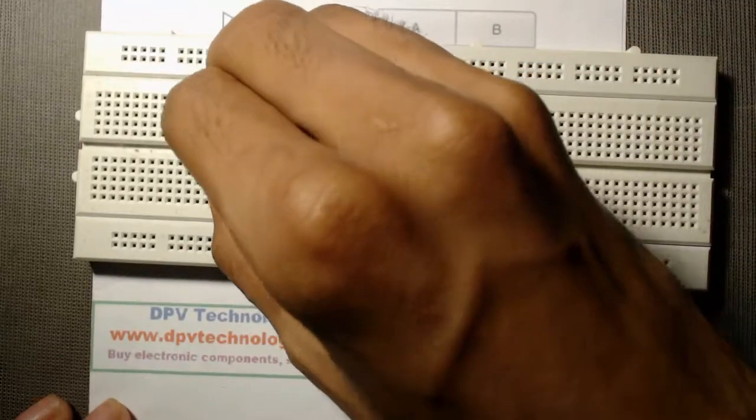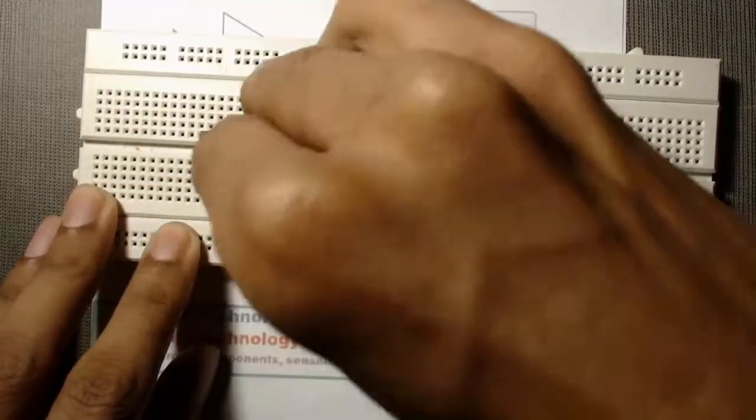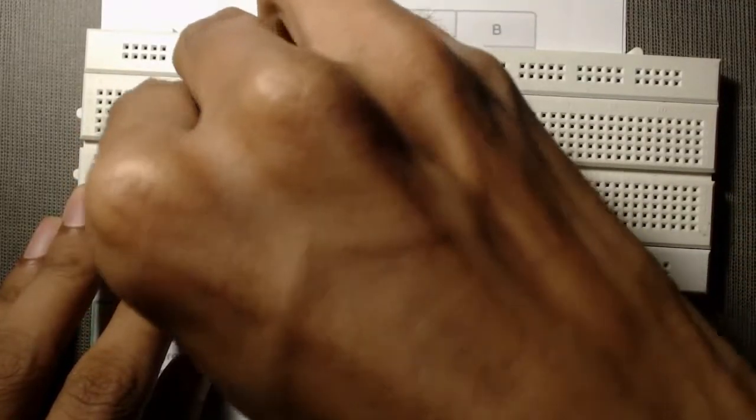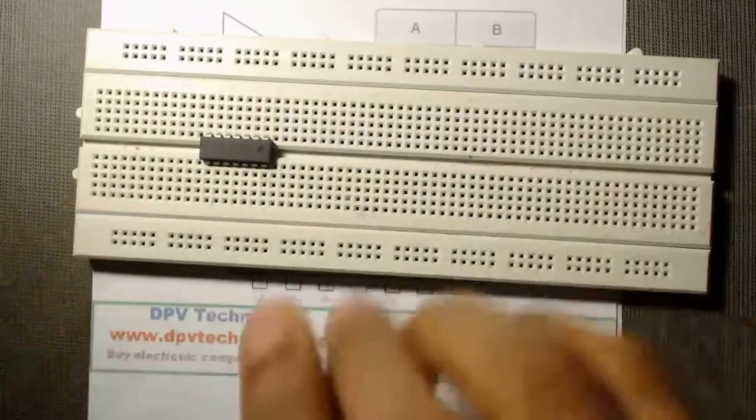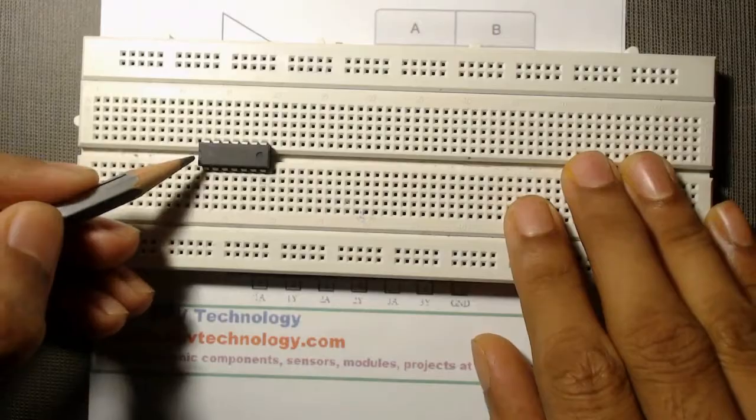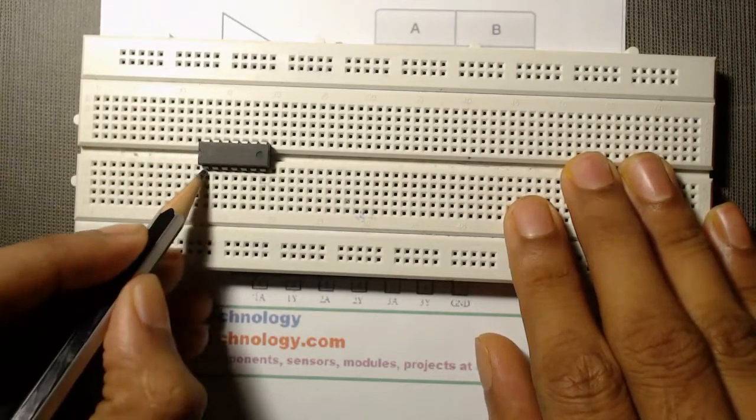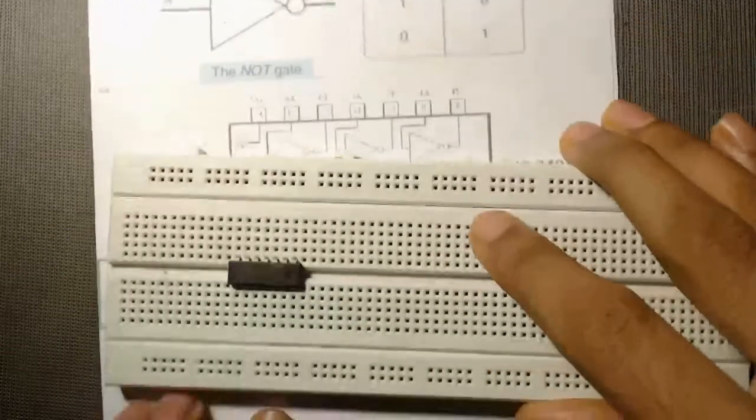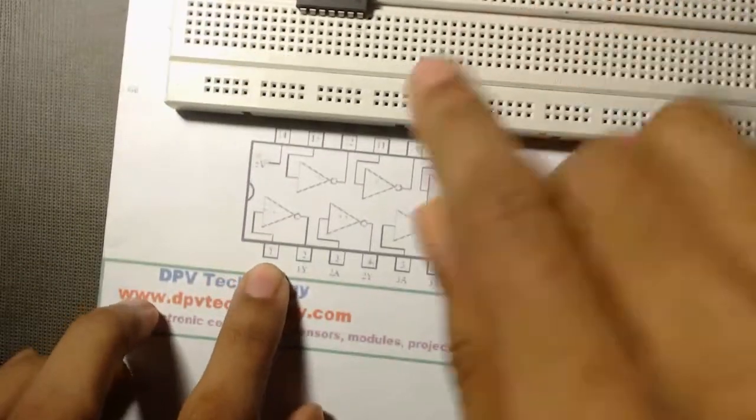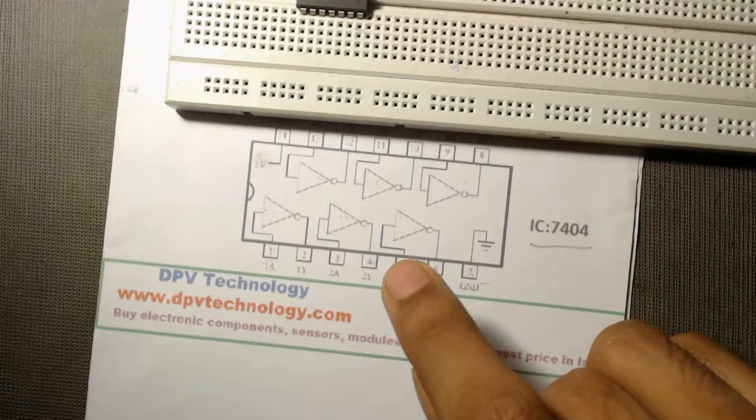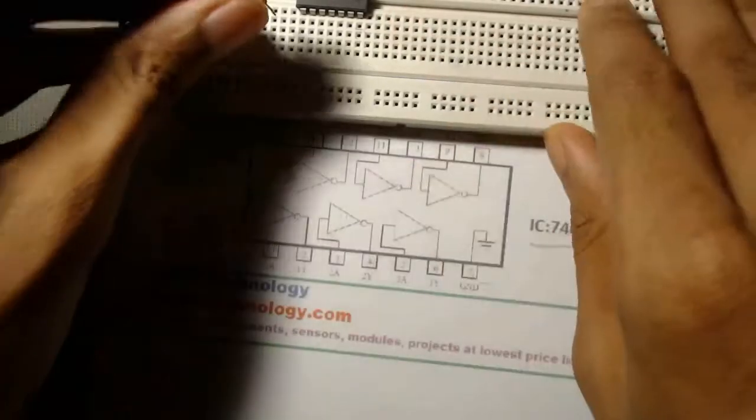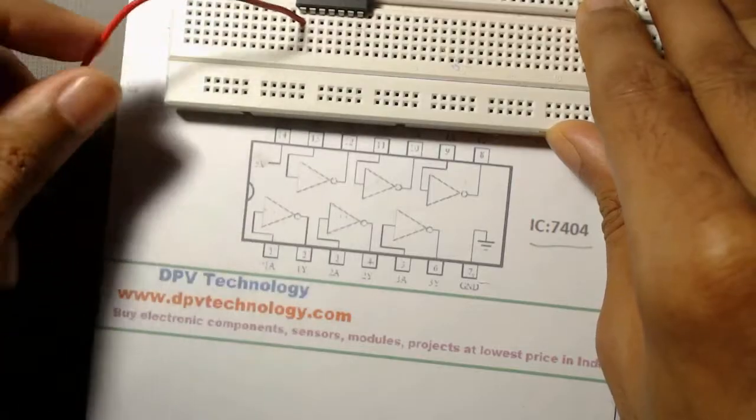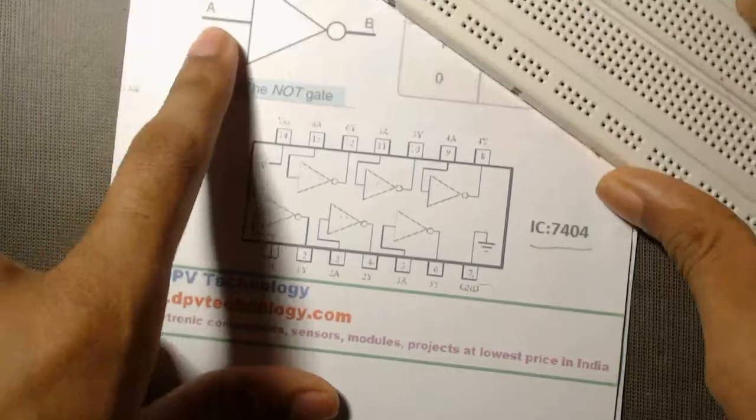First we will insert it by keeping this cut mark to the left side. So this is pin number 1. We will connect a wire, pin number 1 is the input. So we will connect a wire at pin 1 and we will use this terminal as terminal A.